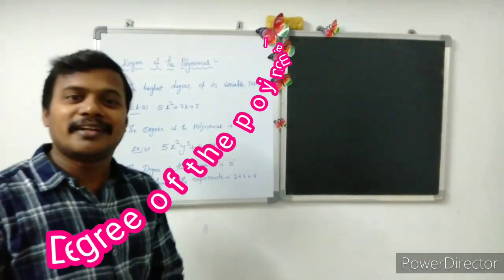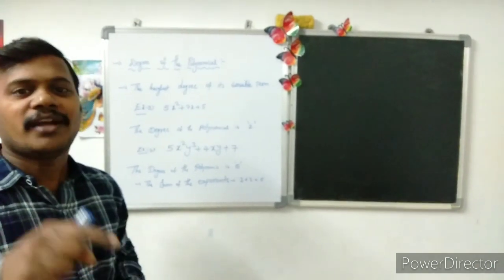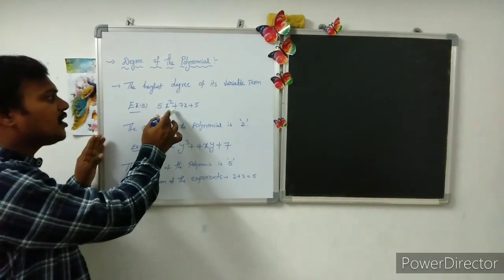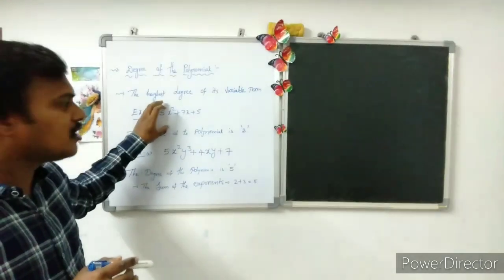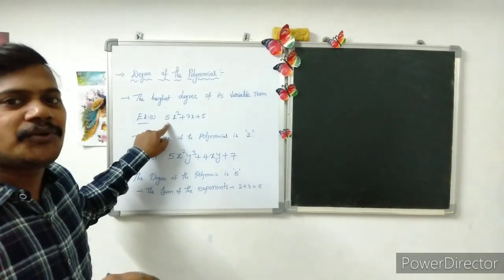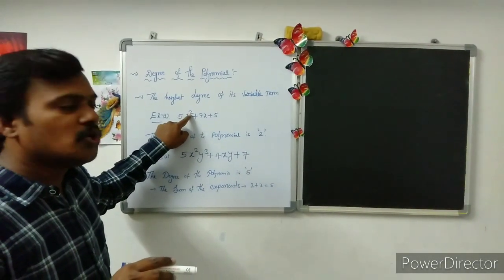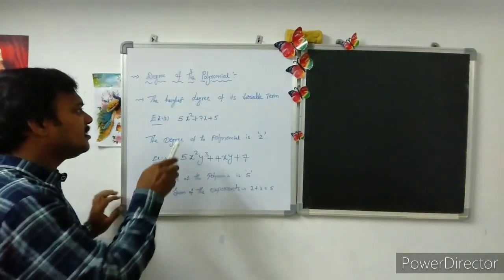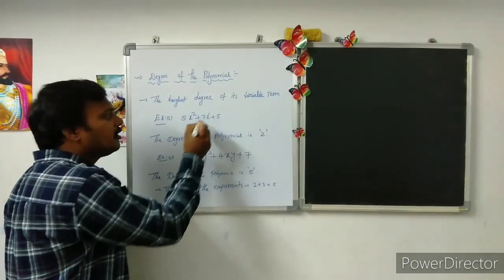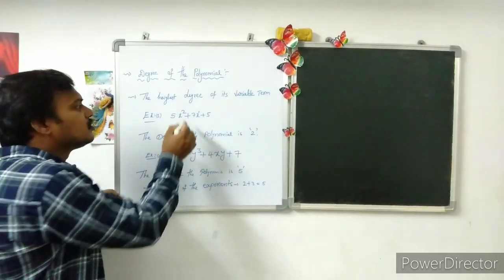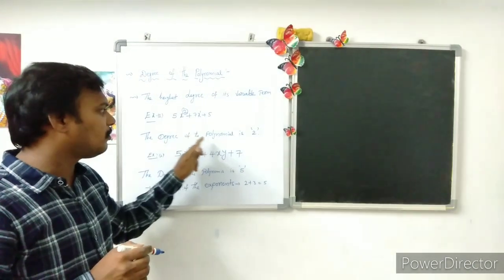The degree of a polynomial is the highest degree of its variable terms. For example, in 5x² + 7x + 5, the variable powers are 2 and 1. The highest power is 2, so the degree of this polynomial is 2, and it is a quadratic polynomial.